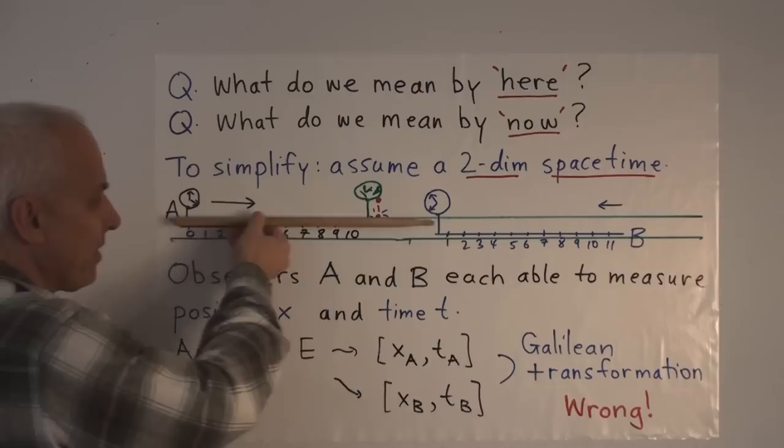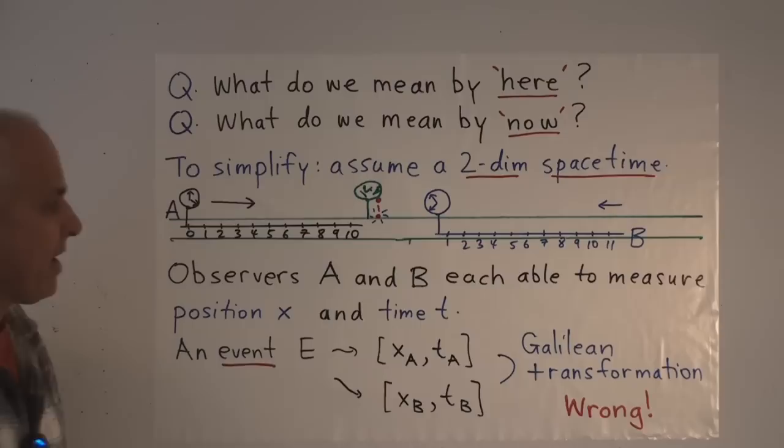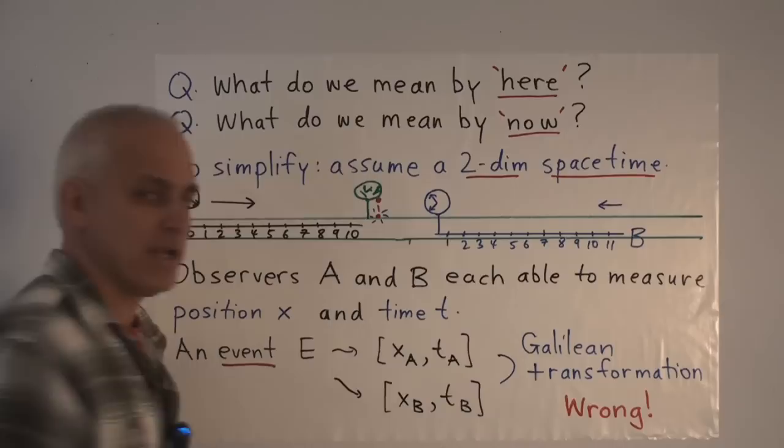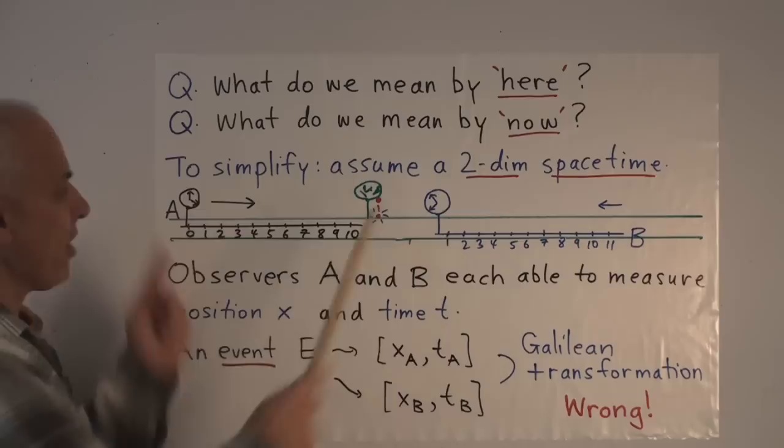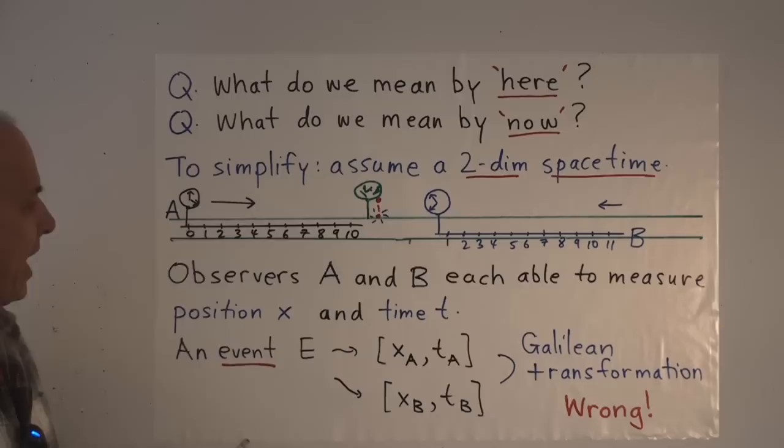And let's suppose that we have two observers. Here's an observer A within a rocket ship, say, and he's moving this way here. And this observer has a frame of reference, a coordinate system that he's carrying along with him. And over here is an observer B, and she may be moving in this direction. Also, she's carrying her coordinate system. And they both have clocks by which they measure times.